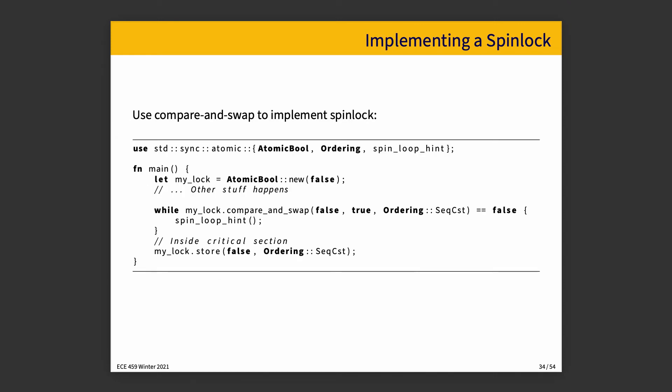Here is using compare-and-swap to implement a spin lock. We declare a lock as an AtomicBool, and then we use compare-and-swap from false to true with sequential consistency. If we get back false, it means the lock was unlocked, and in that case we can break out of that loop, because the while loop condition will evaluate to false so we can leave.